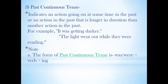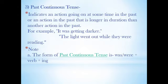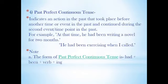Past continuous tense indicates an action going on at some time in the past, or an action in the past that is longer in duration than another past action. For example: 'It was getting darker'; 'The light went out while they were reading.' The form of past continuous tense is 'was' or 'were' plus verb plus '-ing.' Whenever you use past continuous tense, 'was' or 'were' is important along with the '-ing' form of the verb.